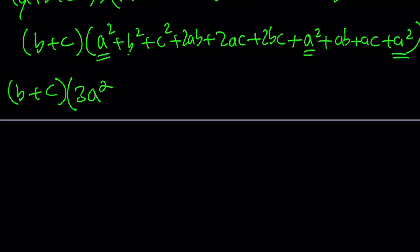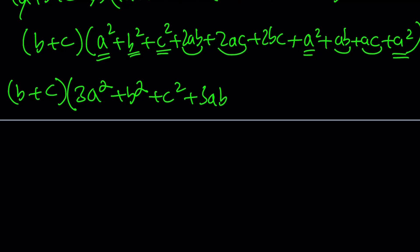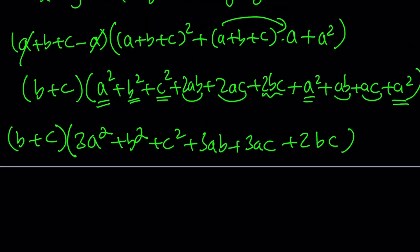And then we only have b squared once, so b squared plus c squared. Those are the squares. Then we have 2ab plus ab, which gives us 3ab. And then we have 2ac plus ac, which is 3ac. And then we only have 2bc. So we have 3 of ab and ac, but only 2bc.